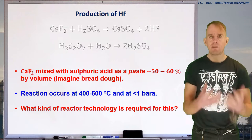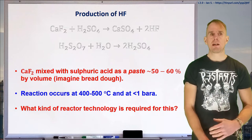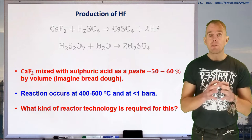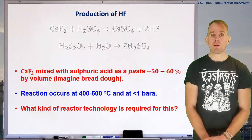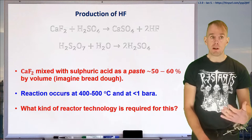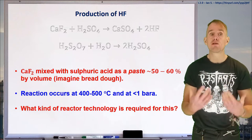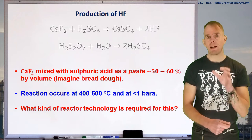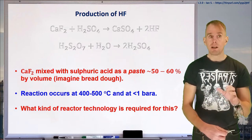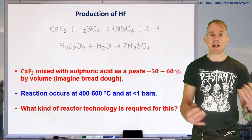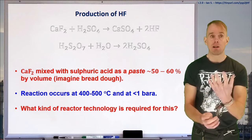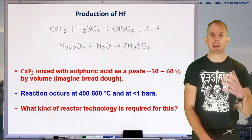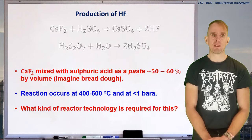When you heat this mixture up, you get calcium sulfate and hydrogen fluoride. The way this particular process worked also employed the use of fuming sulfuric acid, or oleum, and this was to try to dehydrate the system. If there's any water present, you don't want the HF reacting with it, so you remove the water by adding oleum. Oleum will preferentially react with the water to form more sulfuric acid, which is great, so you end up with anhydrous hydrogen fluoride.